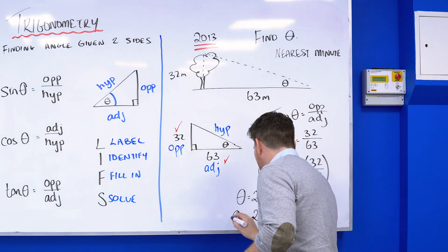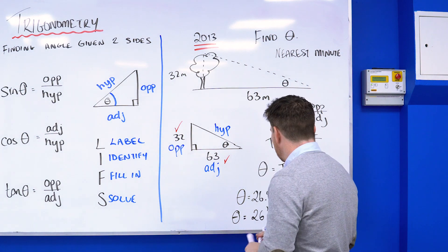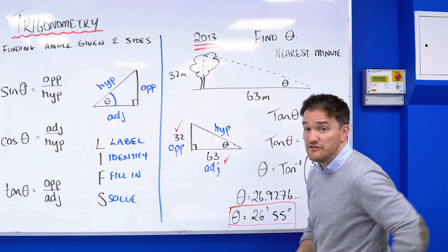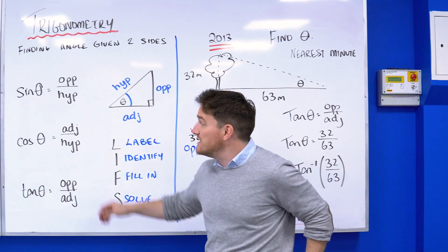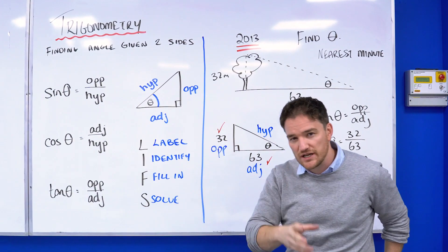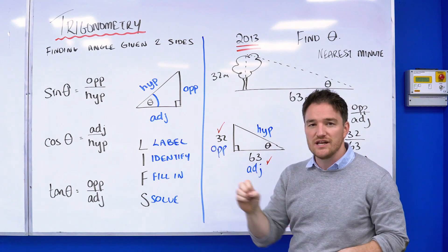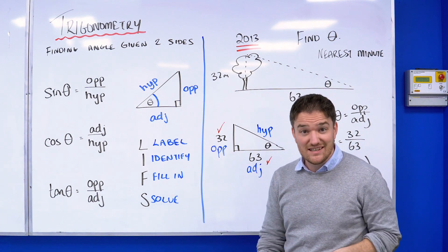Brief recap: to find an angle given two sides, you need to start thinking it's trigonometry, I'm finding an angle. Label your sides, identify your equation, fill it in, and after that you're laughing. Best of luck!